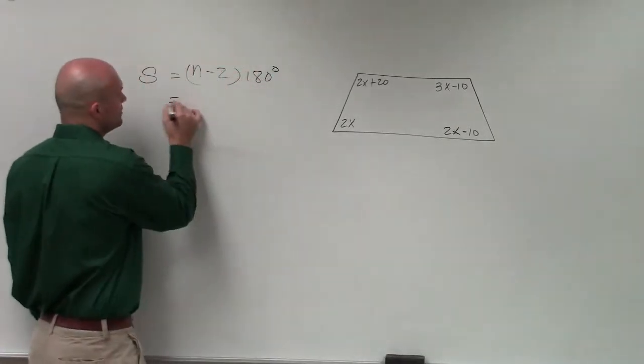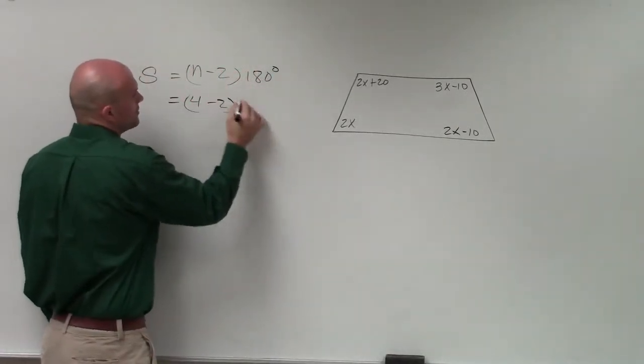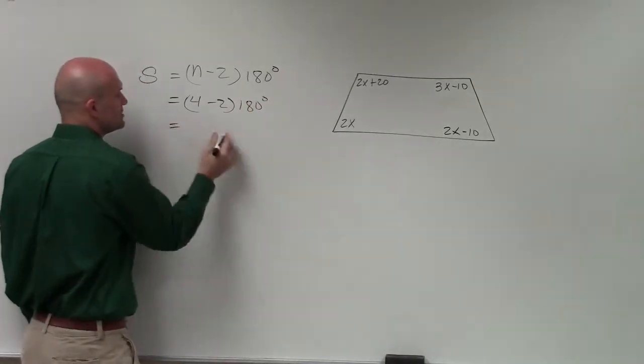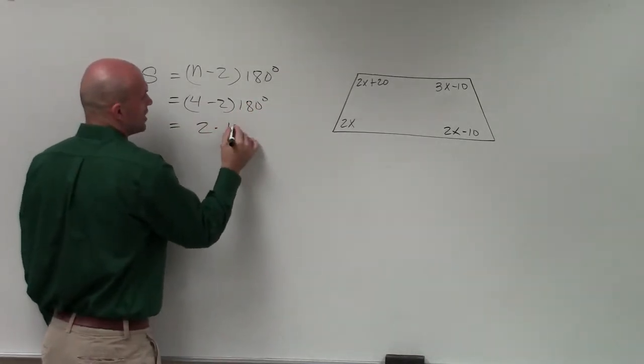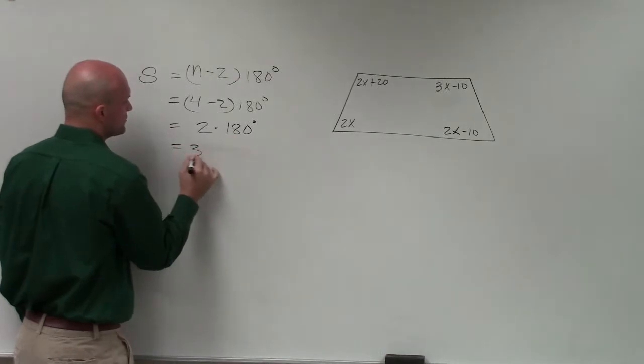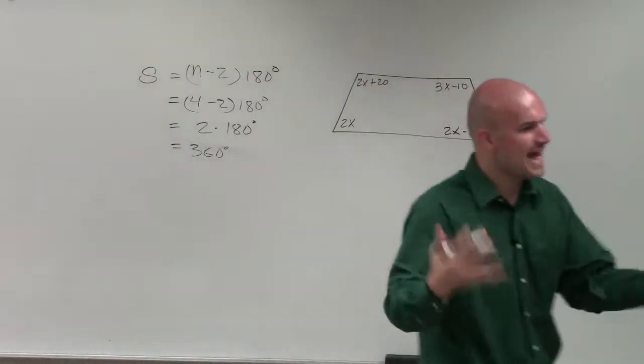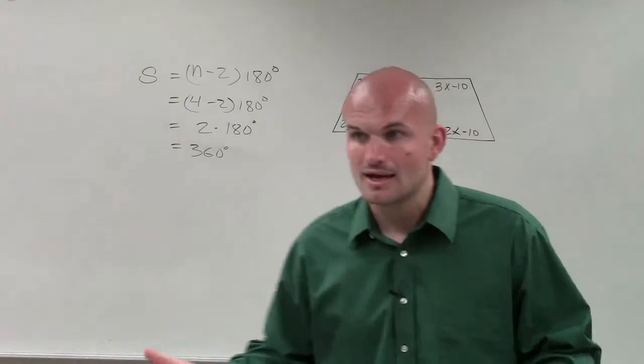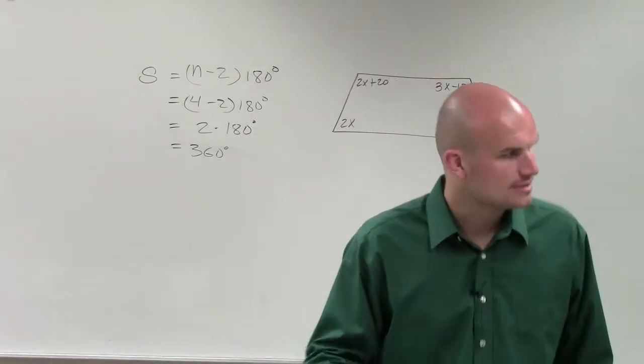Well, here we have a quadrilateral. So that's 4 minus 2 times 180 degrees, which equals 2 times 180 degrees, which equals 360. That means if I was to add up all of those angles, I would get 360 degrees, right?